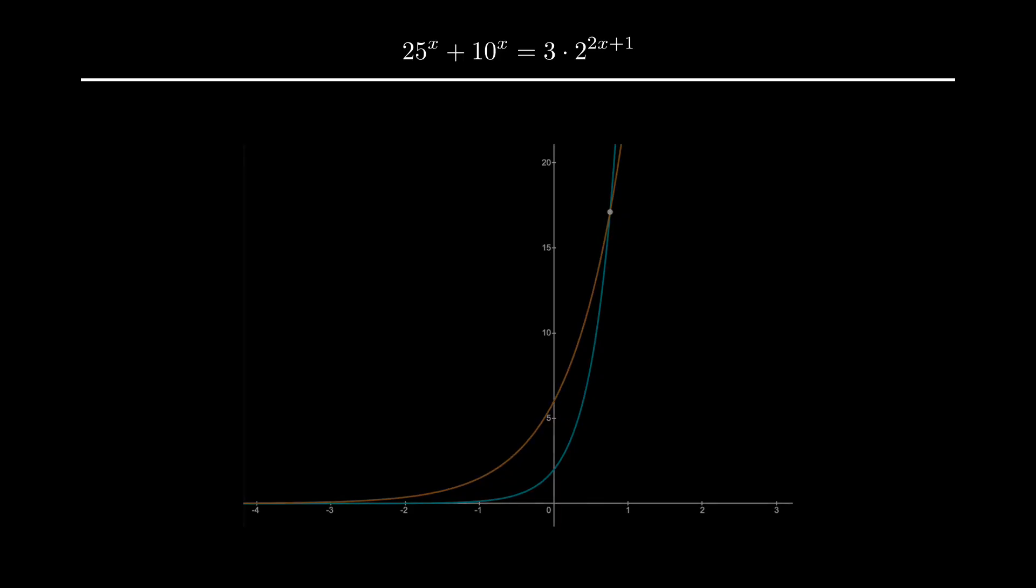Instead, we should rely on our properties of exponents. We're going to start off by trying to write everything with an x in the exponent, just with a single x in that exponent. So let's break up the 2^(2x+1) as 2^(2x) times 2^1.